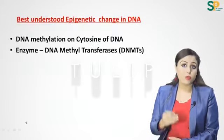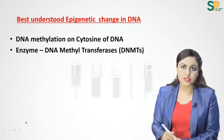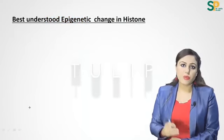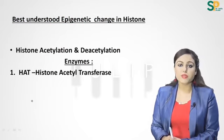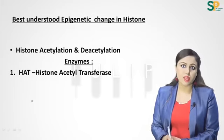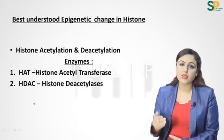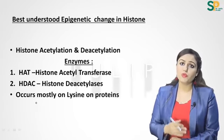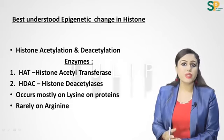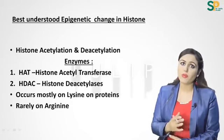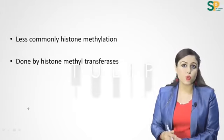The best understood epigenetic change in DNA is DNA methylation on cytosine of CG sites, with the enzyme DNMTs. The best understood epigenetic change in histones is histone acetylation and deacetylation. The enzymes involved are HAT (histone acetyltransferase) for acetylation, and HDAC (histone deacetylases) for deacetylation. These PTMs mainly occur on lysine residues, and less commonly on arginine.